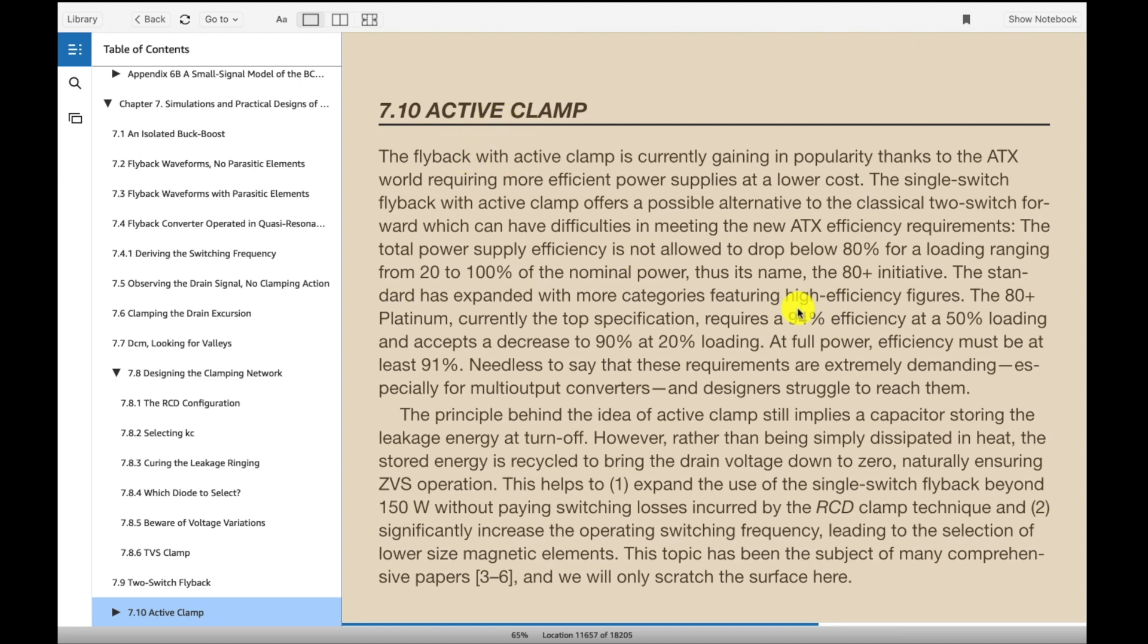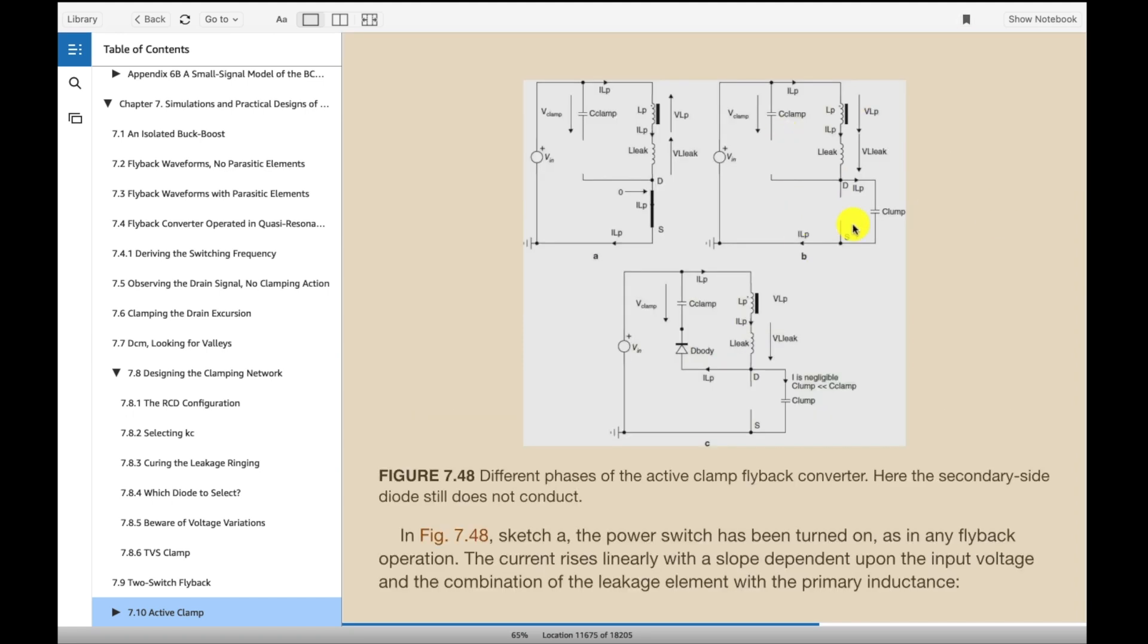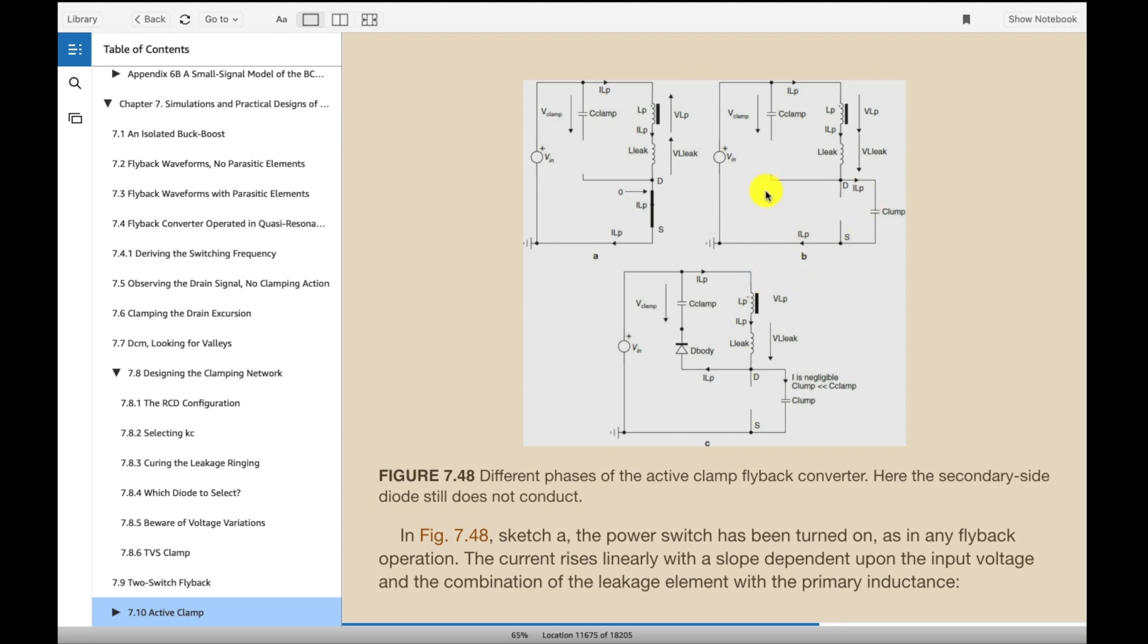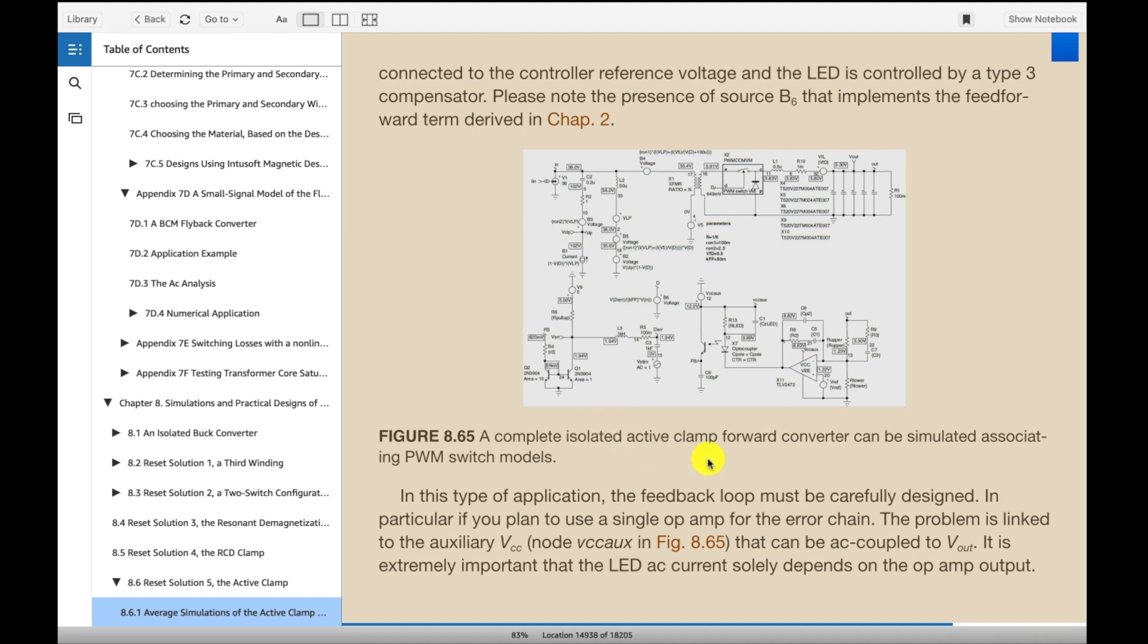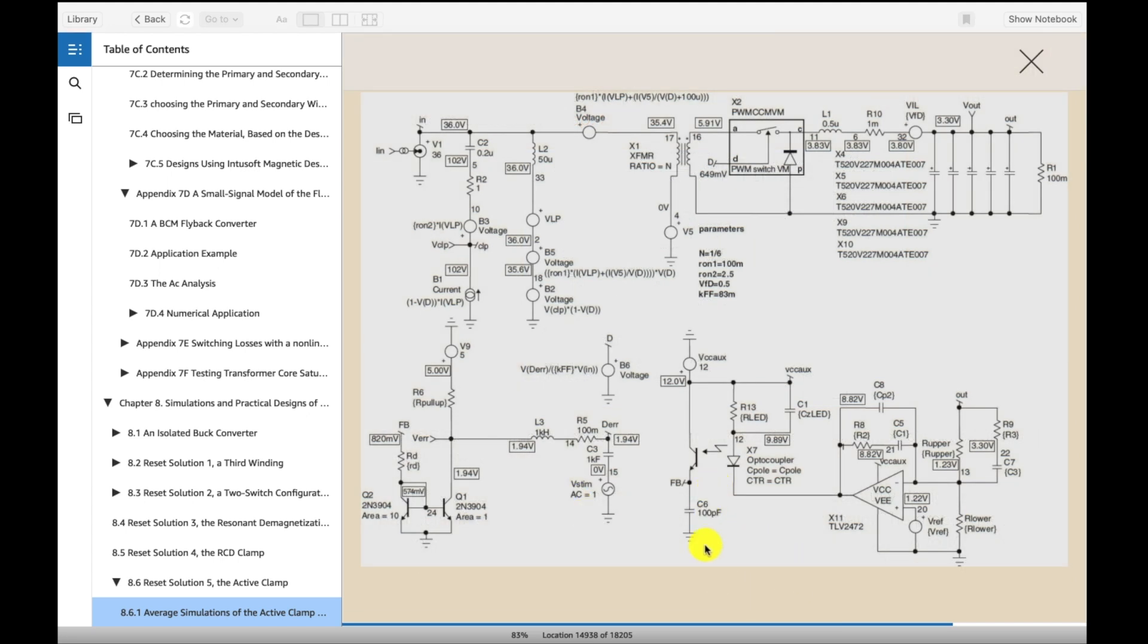Now, this is an active clamp section. That's 7.10. I think this is really interesting. If you guys have done forward converters, you might find this interesting, this schematic. And this is how it gets into explaining the different modes of operation. So, here's more of a complete simulation model of an active clamp. There's a really good example of how you can simulate that.